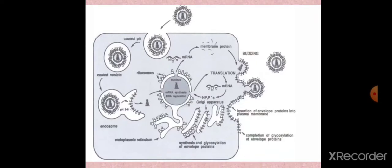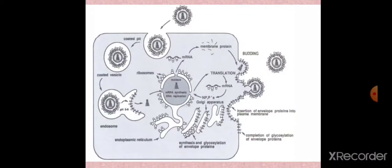Peculiar phenomena in orthomyxovirus replication include cap snatching, splicing mechanism, and pinching off. These phenomena are specific to orthomyxoviruses. The diagram shows how orthomyxoviruses enter inside coated pits, form endosomes, fuse within them, and the nucleocapsid enters the nucleus for replication and transcription. Proteins are transported to the cytoplasm for assembly. Enveloped viruses are released from the cell membrane by budding, while non-enveloped viruses are released by lysis.